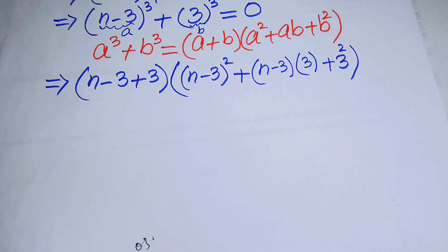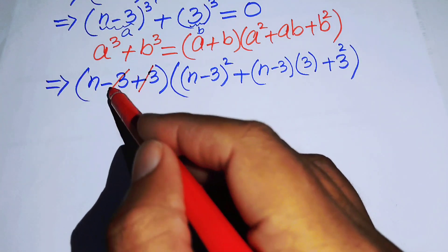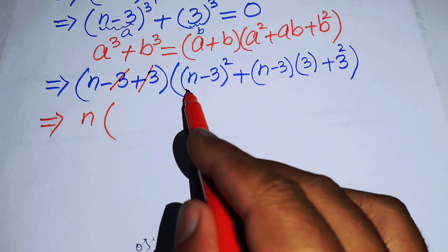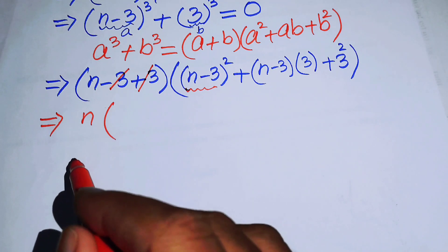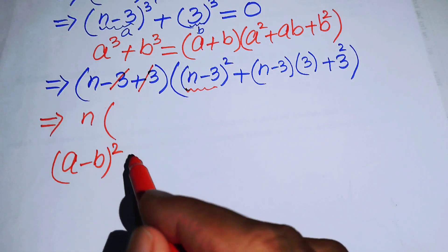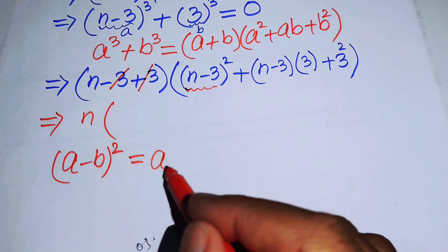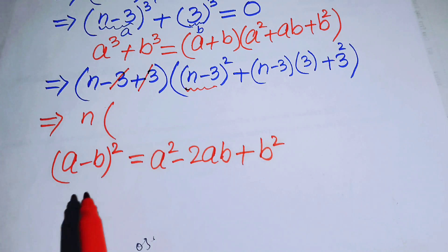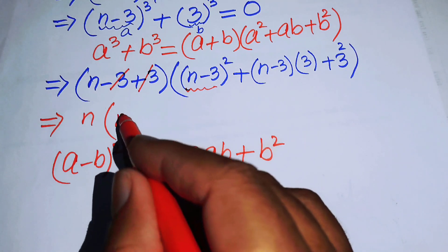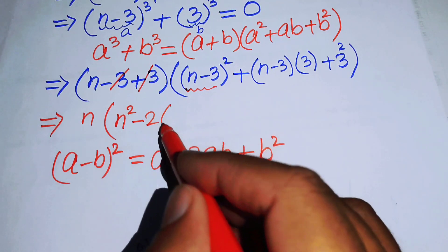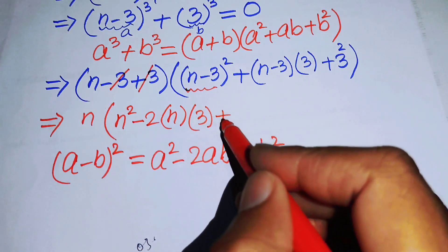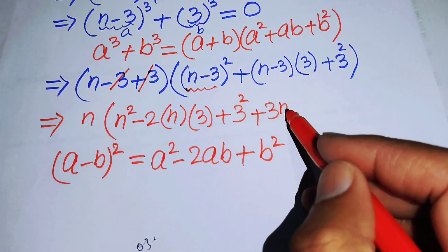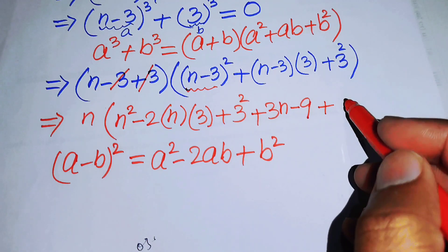After simplification, the minus 3 and plus 3 cancel, leaving us with n. We then apply the formula (a minus b) squared equals a squared minus 2ab plus b squared to expand (n minus 3) squared, giving n squared minus 6n plus 9. Multiplying through by 3 gives 3n minus 9, and b squared gives 9.